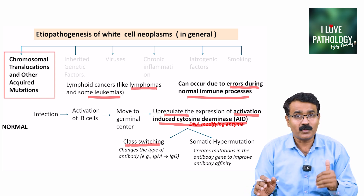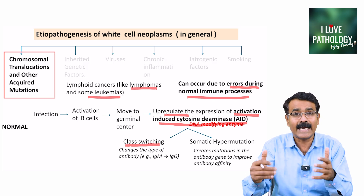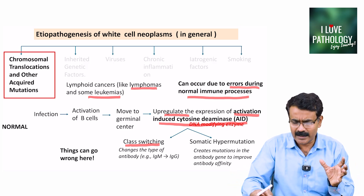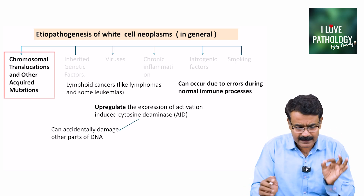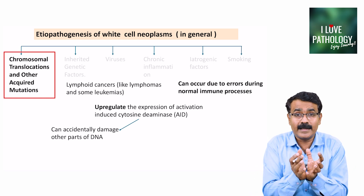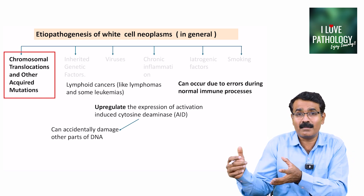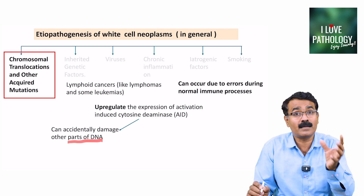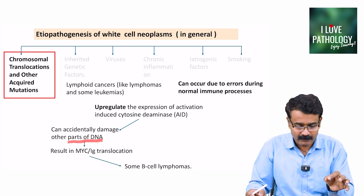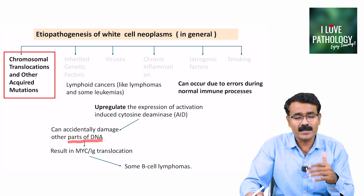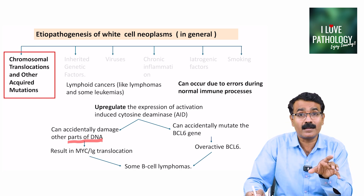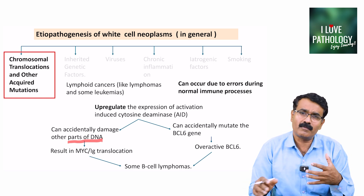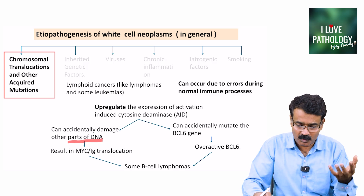In leukemias, if there is mutation involving AID, this DNA modifying enzyme, things can go wrong. It can accidentally damage other parts of the DNA. For example, MYC-immunoglobulin translocation can occur, resulting in some B cell lymphomas. Or it can accidentally mutate the BCL6 gene, causing over-activation of BCL6, which can also result in some follicular cell lymphomas.